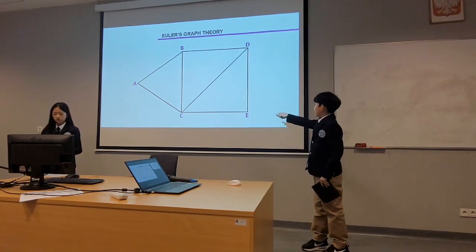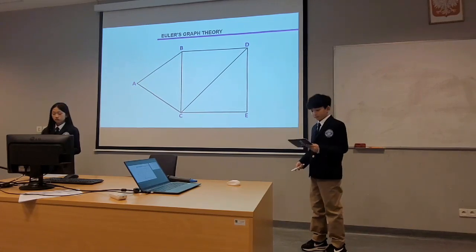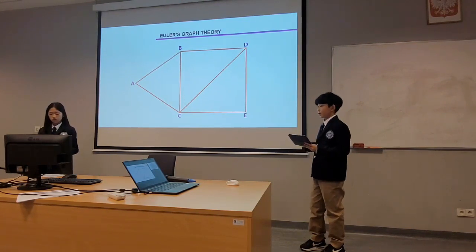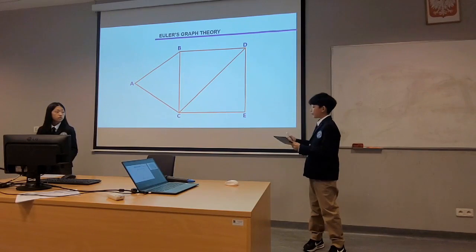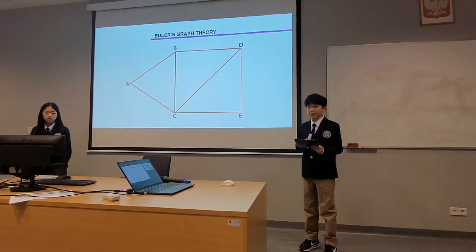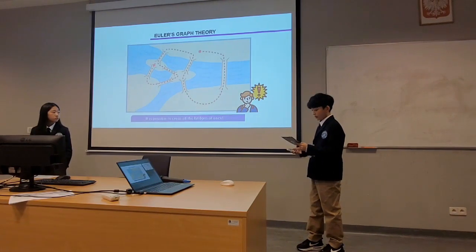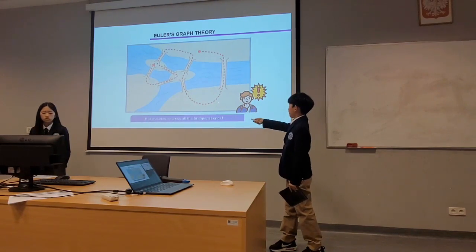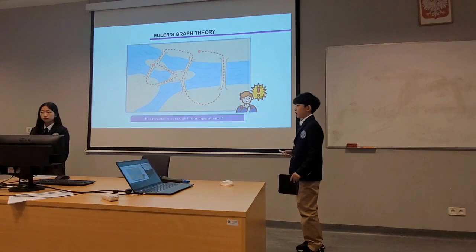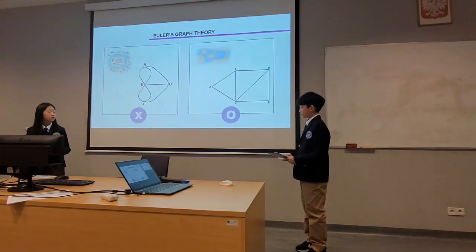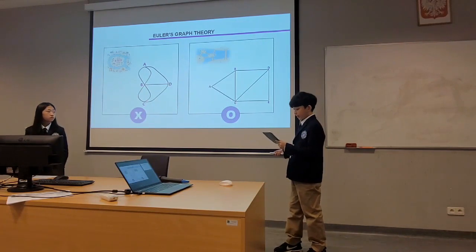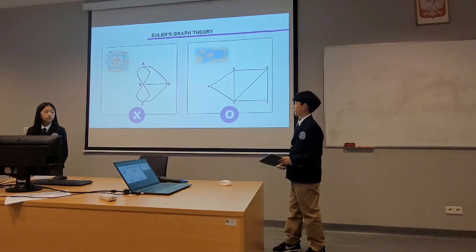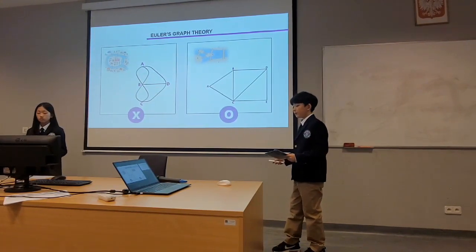The order will be D, E, C, D, E, C, A, B. Since the shape was possible to draw with one brush, it is proved that all bridges can be crossed exactly once. Looking at the map with all the red dots, it is possible to cross all bridges exactly once. Looking at these two simplified graphs, graph A was impossible to cross all bridges at once, but graph B was possible.